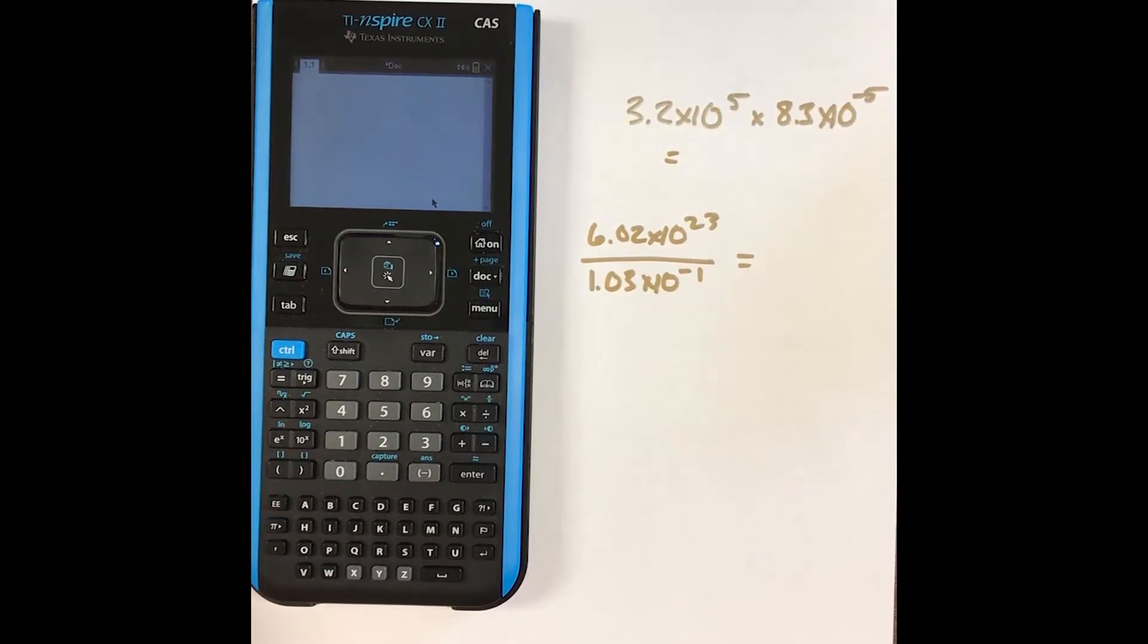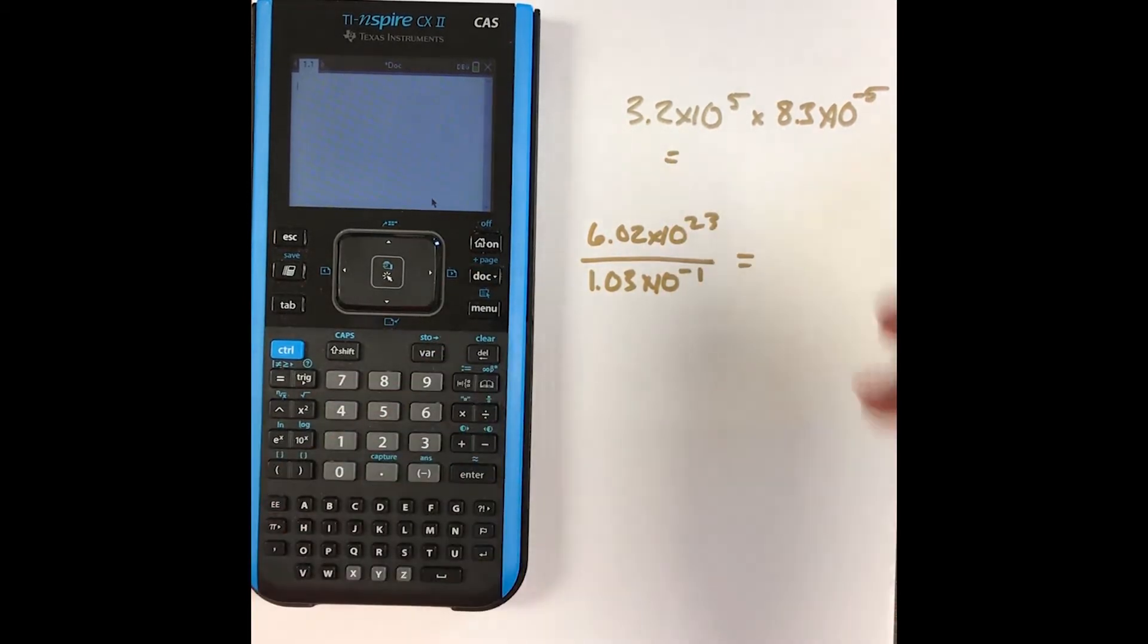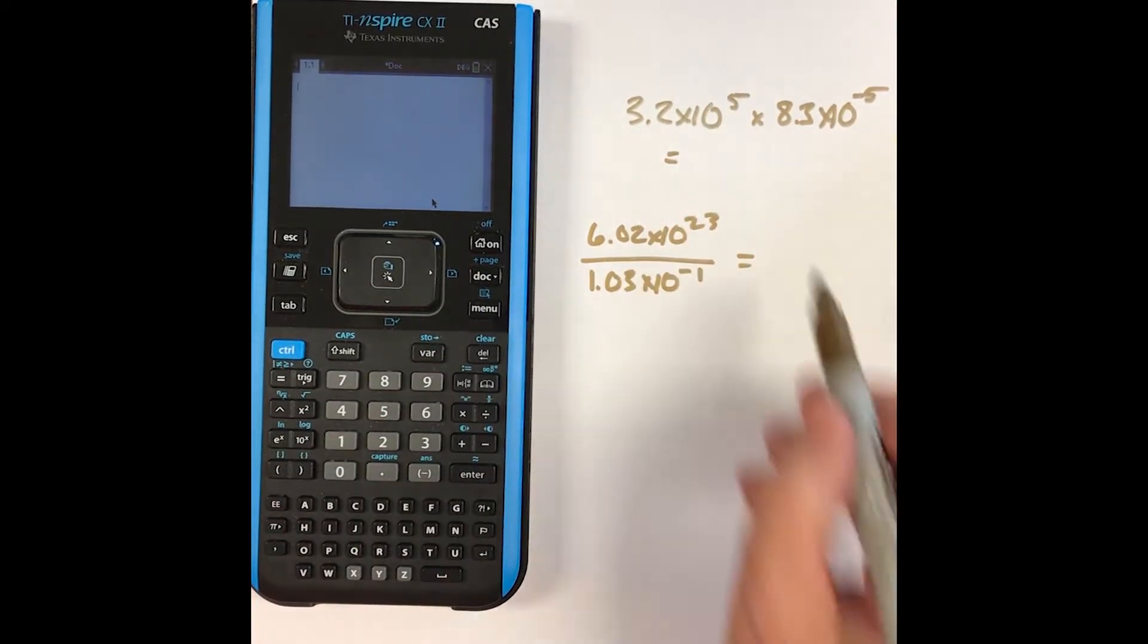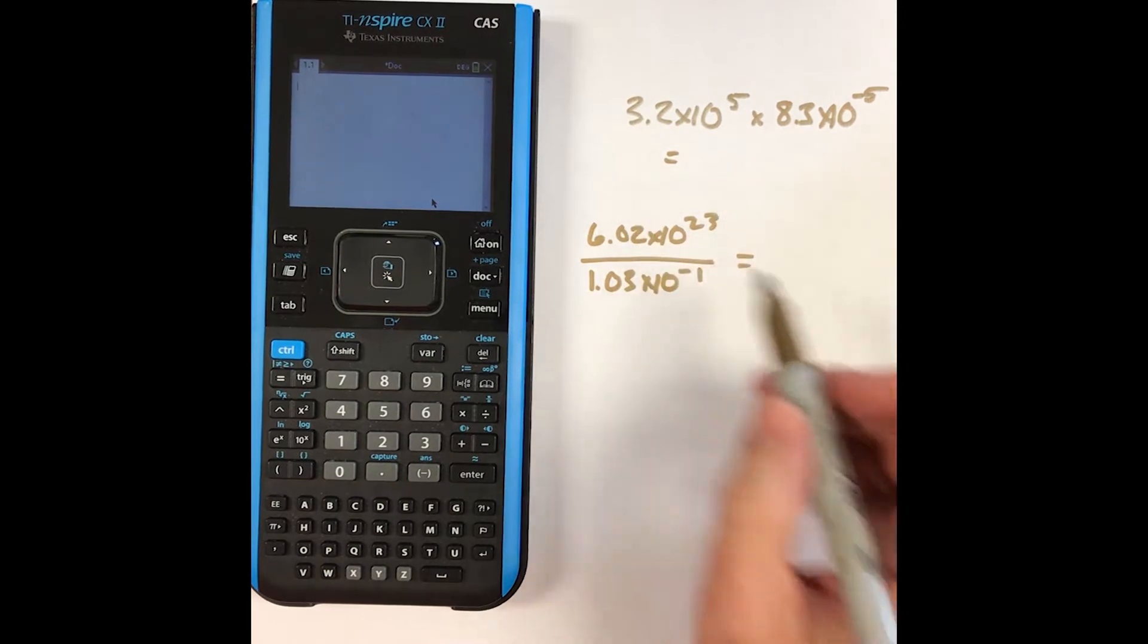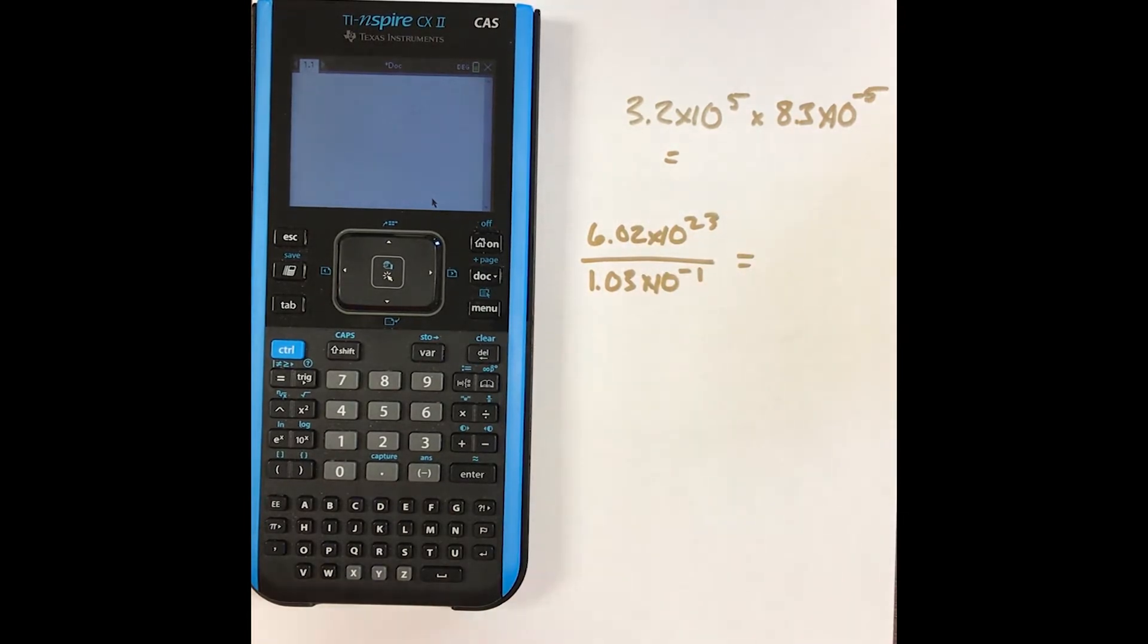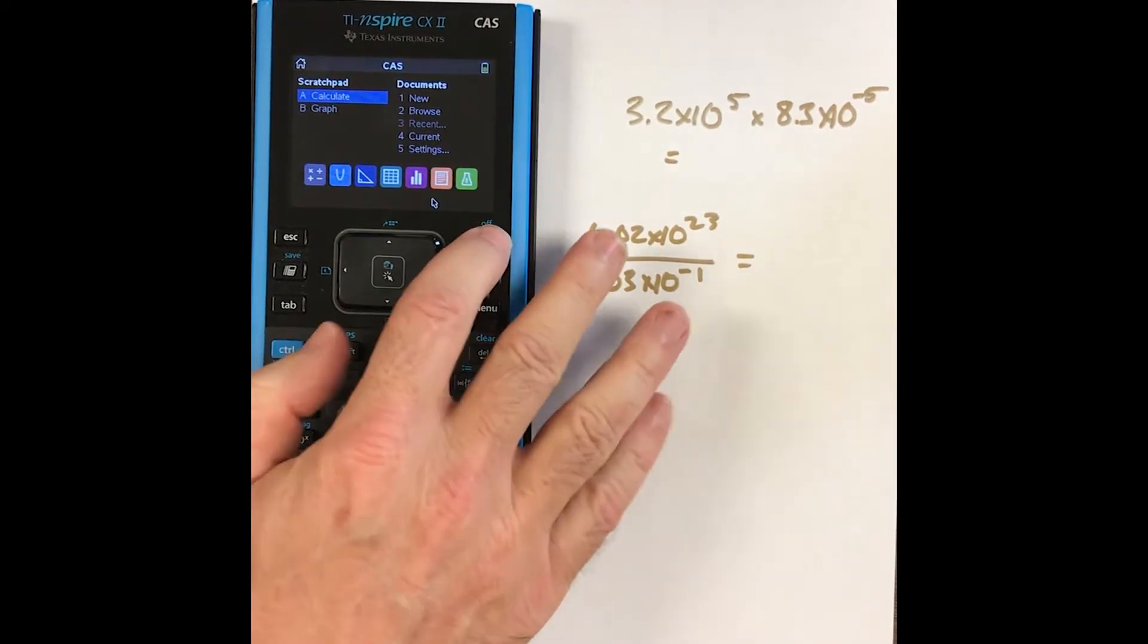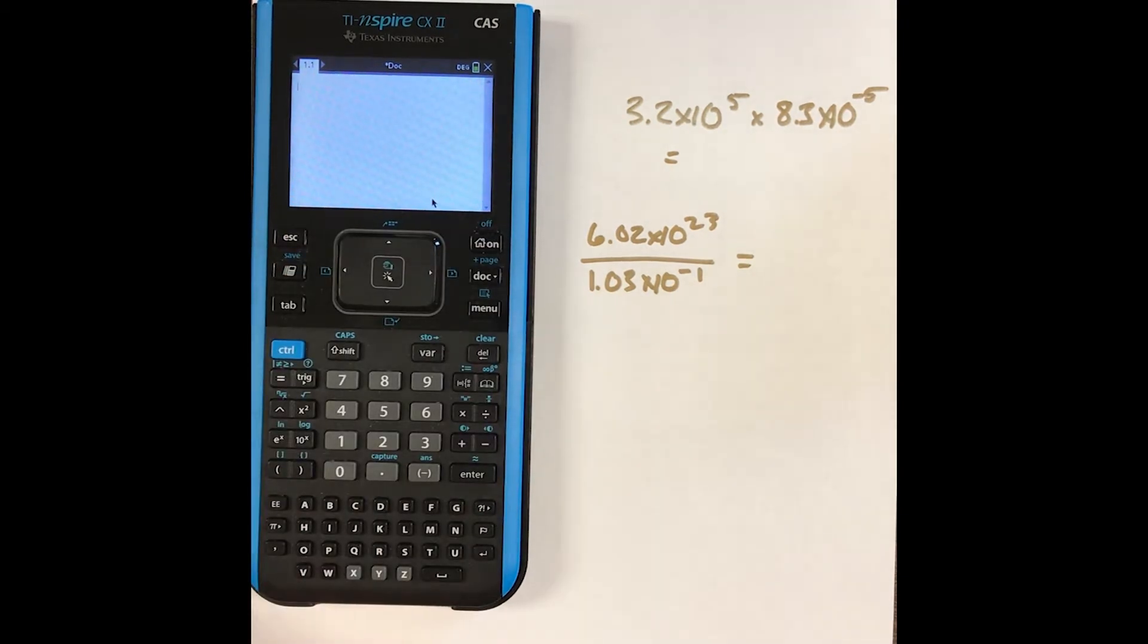So how do you do scientific notation on a TI-Inspire calculator? I want you to make a note here. I have two different problems: a multiplication problem here and a division problem here. I've got my TI-CAS calculator on right here. I want to get to the main screen, the calculation screen.